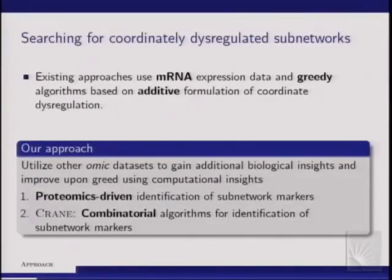In the first approach, we try to utilize biological insights by using other sources of experimental data. We try to use proteomic data to at least make a quick start for the search process. Second, I will talk about a combinatorial formulation of coordinate dysregulation, which allows us to develop more sophisticated algorithms that turn out to be quite effective in identifying subnetworks.